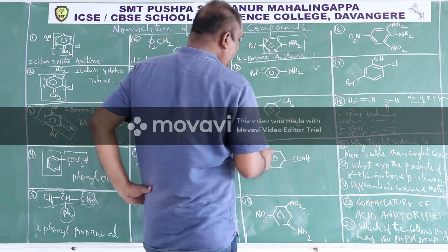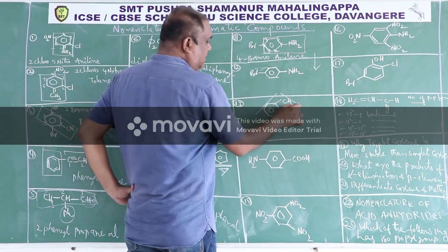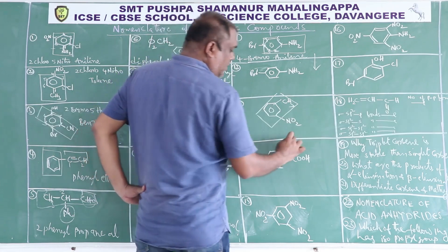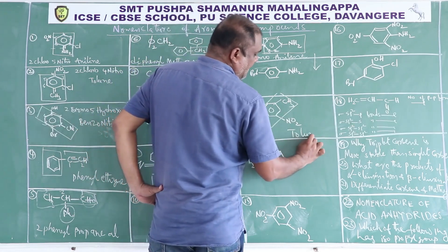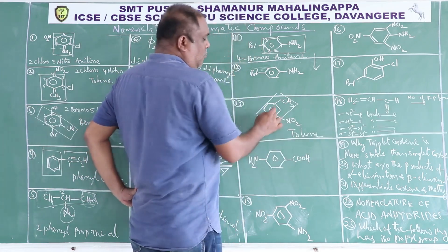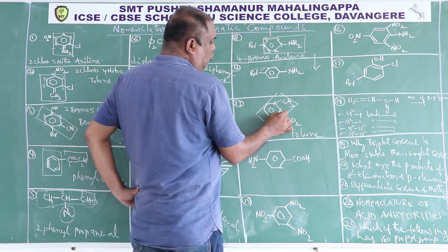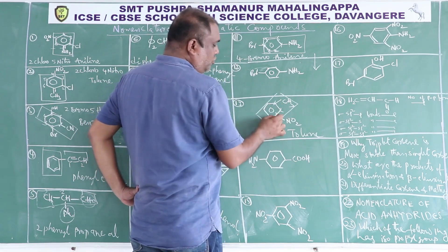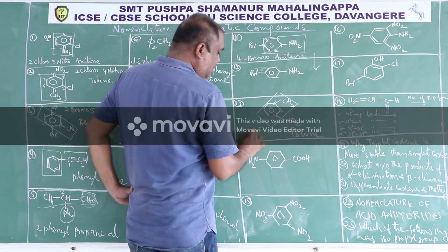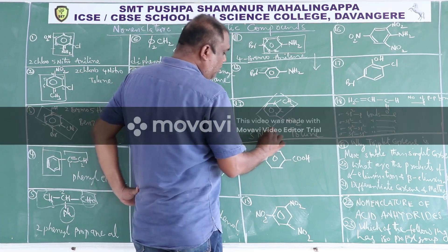Here the base compound is toluene. Numbering 1, 2, 3: the third carbon has a nitro group attached. Therefore the IUPAC name is 3-nitrotoluene.